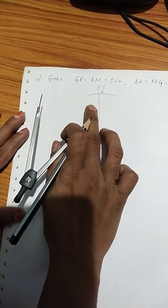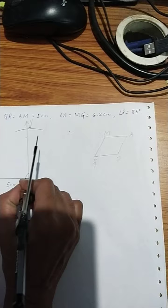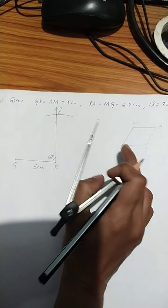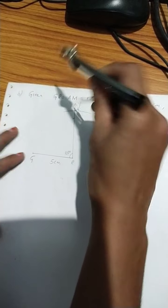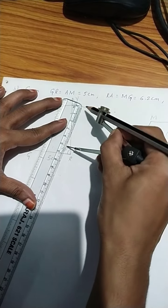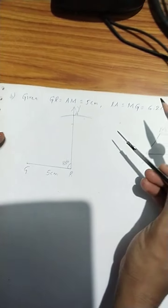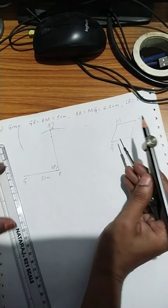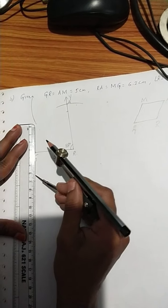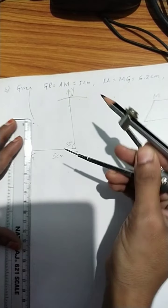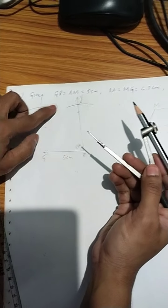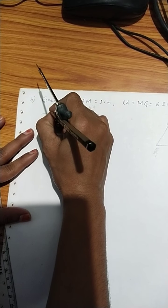Next, you have to construct the fourth vertex M. Angle R equal to 85 degrees — put the angle here. GR equal to AM equal to 5 cm, so from A, take 5 cm. With center A, draw an arc of 5 cm. And RA equal to MG equal to 6.2 cm, so take 6.2 cm. With center G, draw an arc. These two arcs will intersect here. Put the point M.